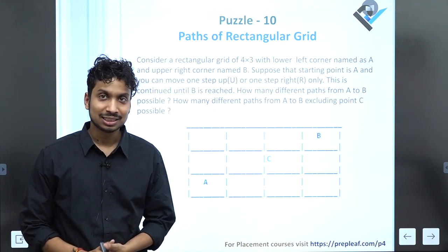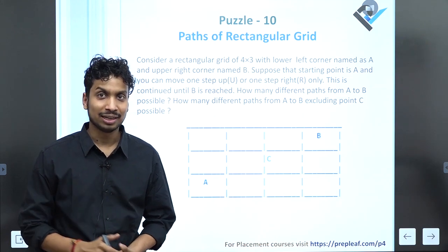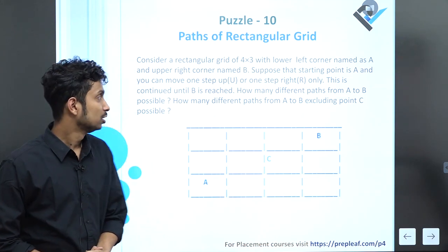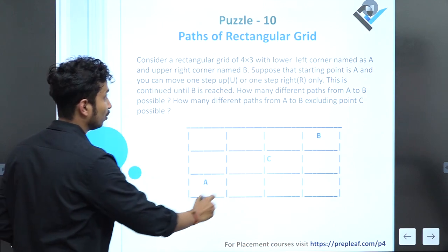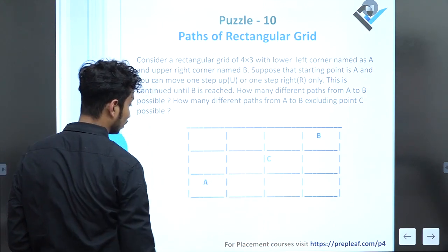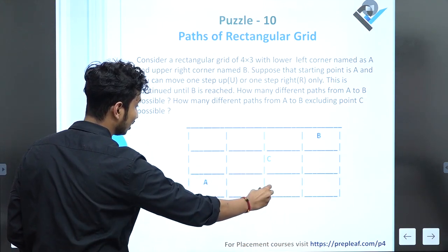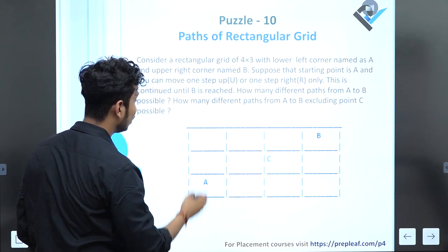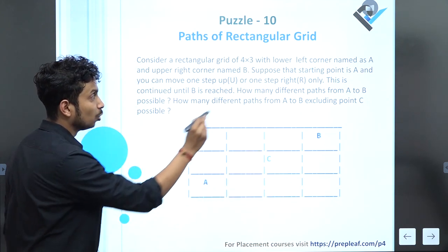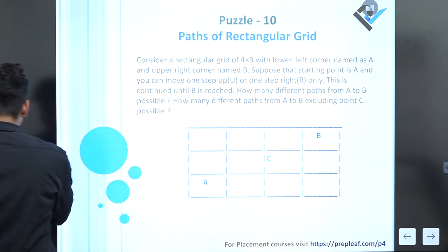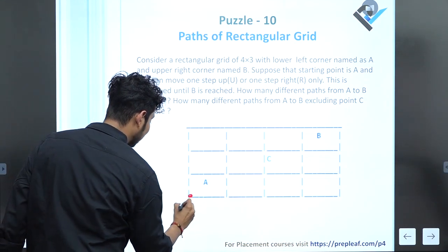Links to all nine puzzles are in the description. Let's move to the puzzle. Consider a rectangular block 4×3, with four columns and three rows, with lower left corner named as A. This is A, this is C, this is B.